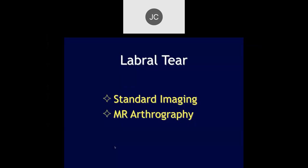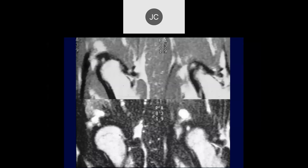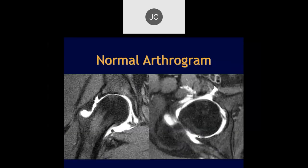Let's talk about labral tears. We can use regular MR imaging or MR arthrography. Some of these cases are old cases — here's an old case showing a labral tear in this location. The imaging we have now is much better. Here are some early arthrograms where you can see the arthrographic material inside the joint space and a normal superior labrum.